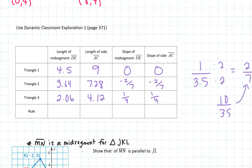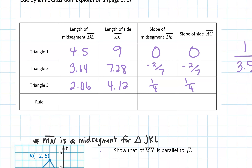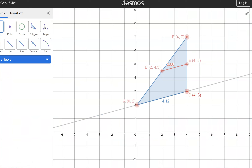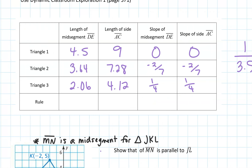I went ahead and put in my information for my three triangles — our first triangles are all the same, but the second and third are different. What did you notice about the slopes of your mid-segment and that other side? They're the same. If the slopes are the same, what does that tell us about the lines? They're parallel. So the mid-segment is going to be parallel to that third side. The mid-segment is also half as long as that third side — that's the theorem.